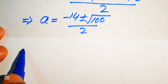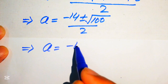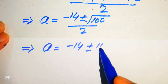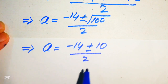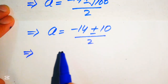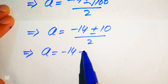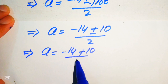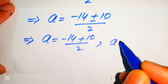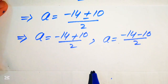Since √100 = 10, we have a = (−14 ± 10) / 2. We now split into two cases: Case 1: a = (−14 + 10) / 2, and Case 2: a = (−14 − 10) / 2.